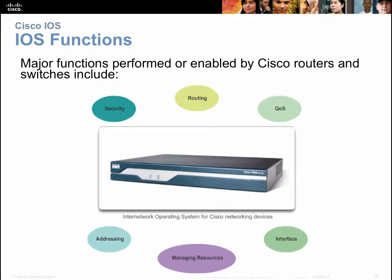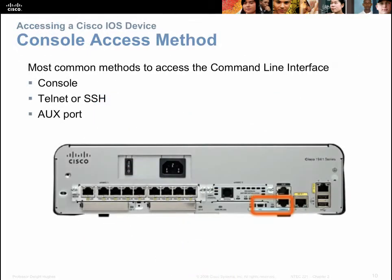The main functions of an operating system — get these in your notes — would be to provide security, routing, quality of service, addressing, managing resources, and your interfaces. Those would be the ports that data is traveling in and out of.